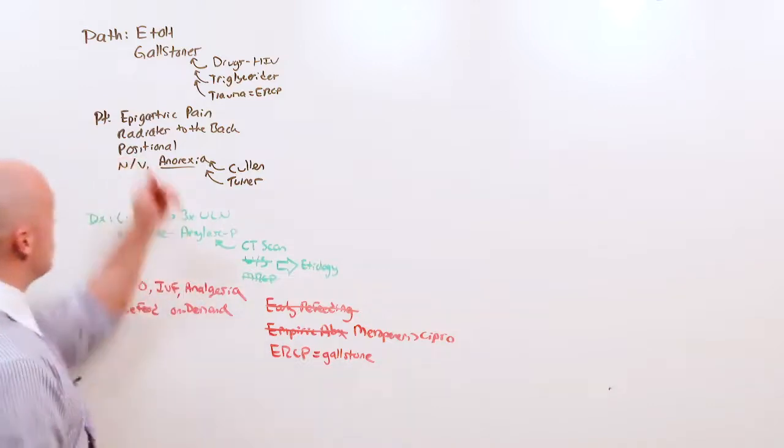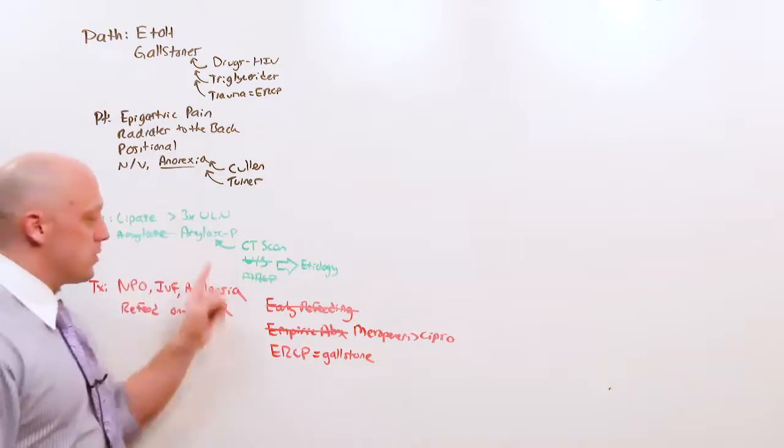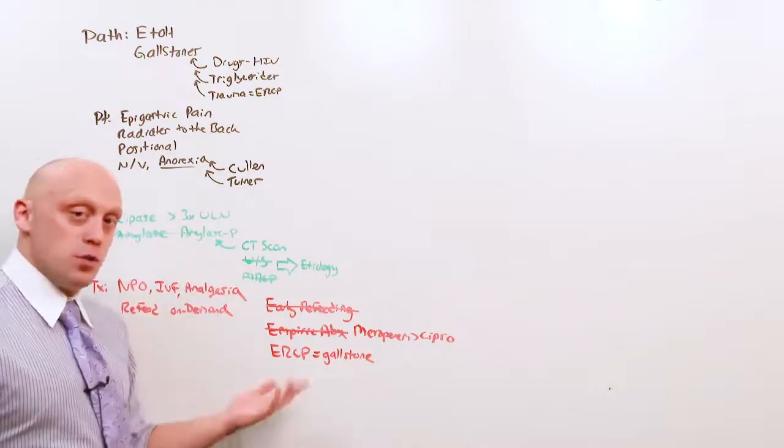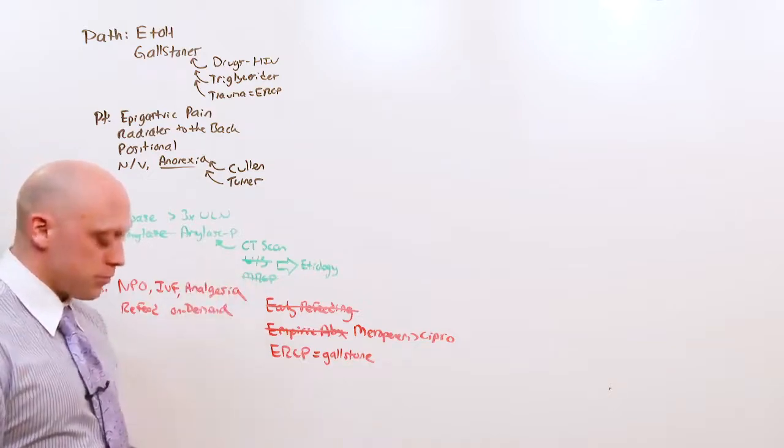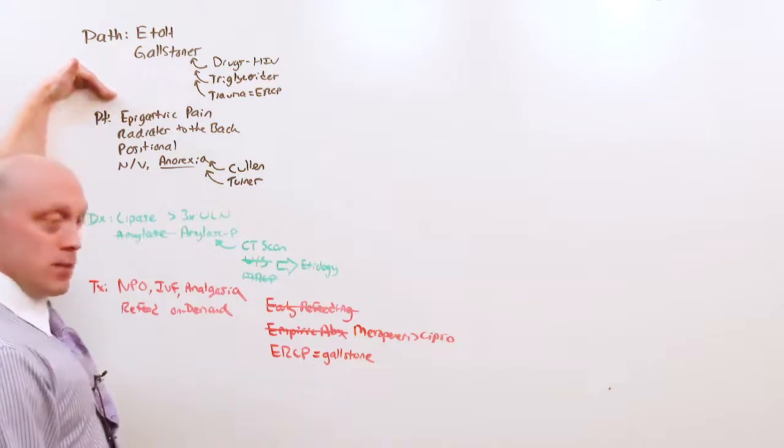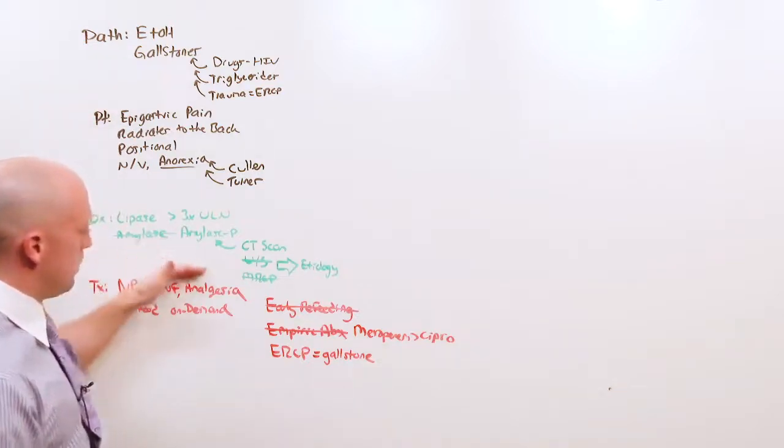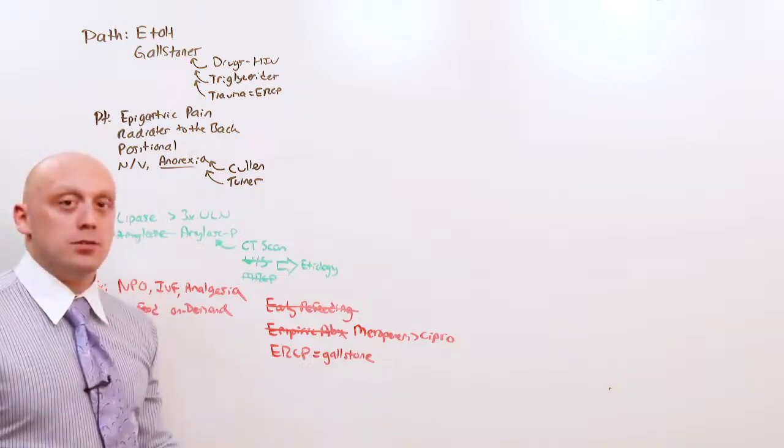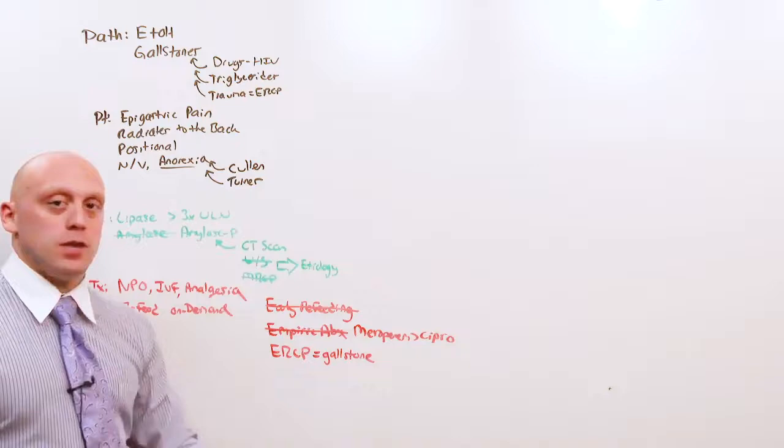Okay, so we just took a simple disease and made it much more complicated. And you can see all the things that they might trip you up on by giving you that option at the wrong point in time. So one more time, alcohol and gallstones, epigastric pain that radiates to the back, anorexia, lipase elevated, NPO fluids, pain meds, and wait it out. All this ancillary stuff is there when you need to go to the next step.